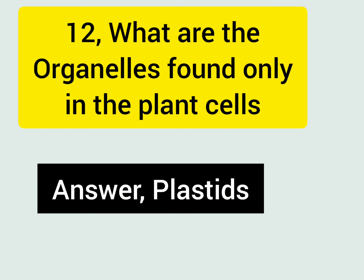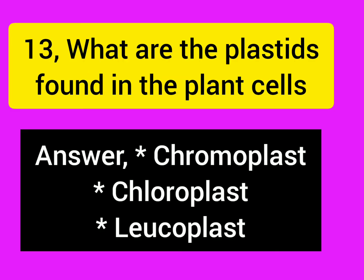What are the organelles found only in the plant cell? Answer: Plastids. What are the plastids found in the plant cell? Answer: Chromoplast, chloroplast, and leukoplast.